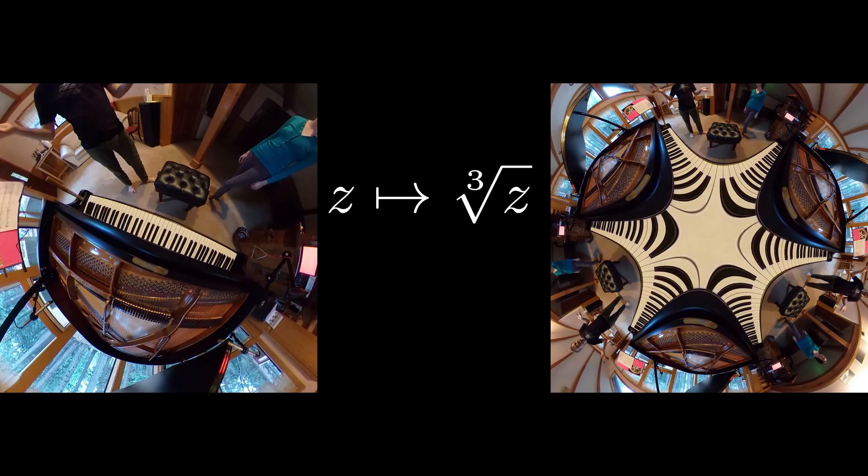What we have to do is choose the color of each pixel in the image on the right. To do that you have to map its position back over onto the left and find the pixel that it came from. This means that the map goes backwards and we are cubing complex numbers rather than taking cube roots.